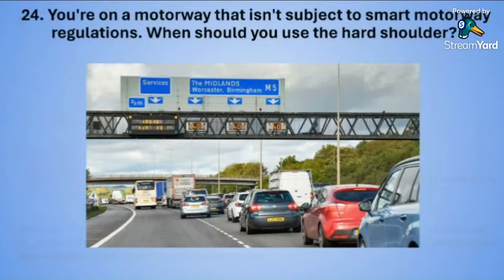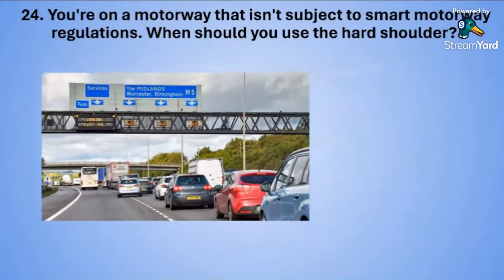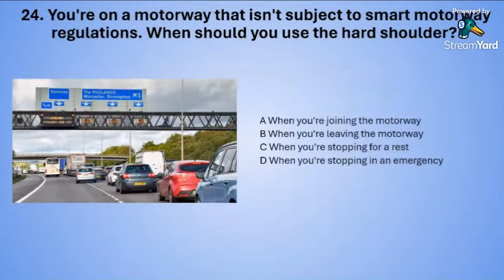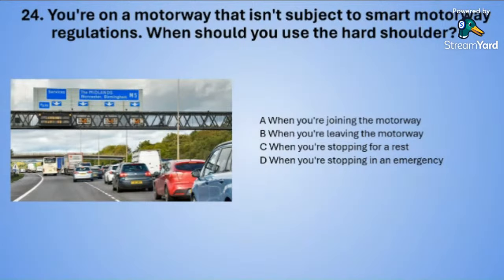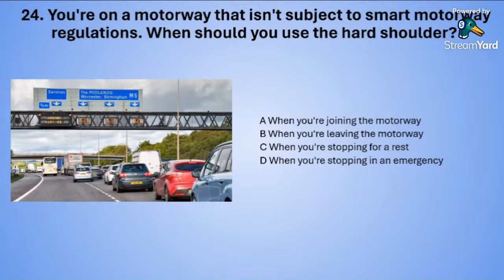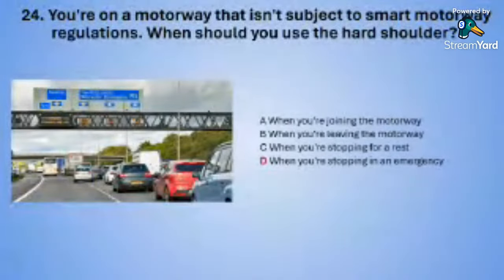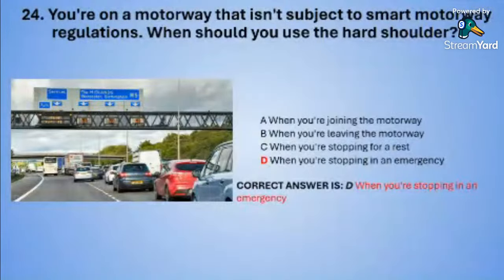Question twenty-four: You are on a motorway that isn't subject to smart motorway regulations. When should you use the hard shoulder? A: when you are joining the motorway. B: when you are leaving the motorway. C: when you are stopping for a rest. Or D: when you are stopping in an emergency. The correct answer is D — when you are stopping in an emergency.